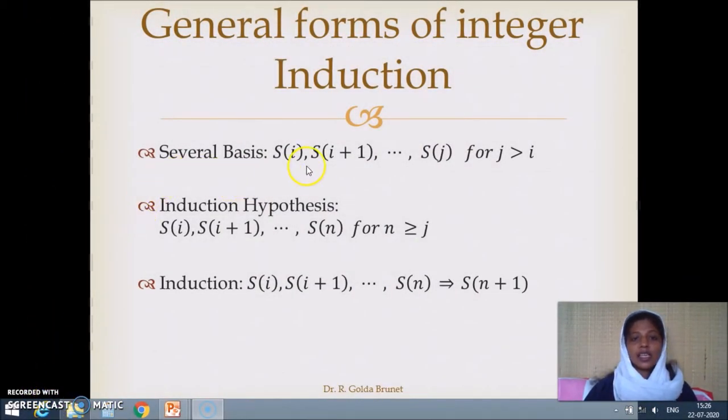Here we are given several basis statements, not just one basis as we have seen in the last example. We have S(i), S(i+1), and so on up to S(j) for some j greater than i. We prove all these base statements are true, and then we assume S(i), S(i+1), up to S(n) for n greater than or equal to j is true.